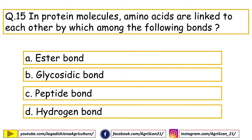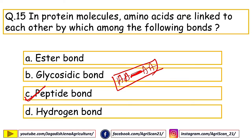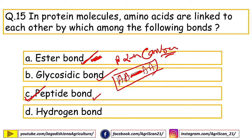Next question: in a protein molecule, amino acids are linked to each other by which bond? Options are ester bond, glycosidic bond, peptide bond, hydrogen bond. The right answer is peptide bond. Protein is composed of different amino acids linked by peptide bonds. Ester bonds are found in fats, oils, and waxes. Glycosidic bonds — both alpha and beta glycosidic bonds — are found in carbohydrates.